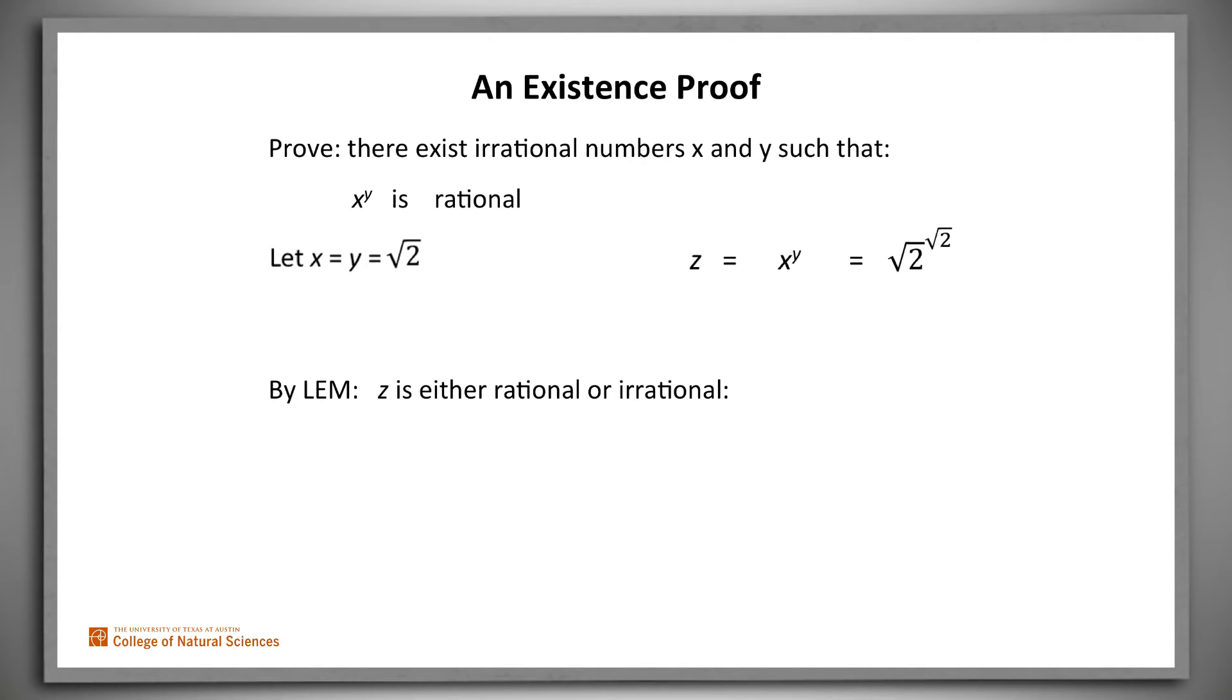Call that quantity z. By the Law of the Excluded Middle, z is rational or not rational. If it's rational, we're done. We've raised an irrational number to an irrational power and derived irrational.